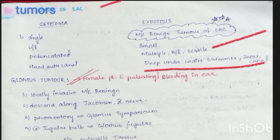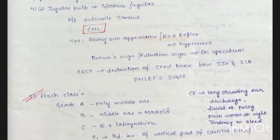Glomus tympanicum is at the promontory; glomus jugulare is at the jugular bulb. Clinical features: pulsatile tinnitus, conductive hearing loss, tympanic membrane shows rising sun appearance or red reflex. Brown sign (pulsation sign) on pneumatic speculum. CT shows destruction of the crest of bone between the internal jugular vein and internal carotid artery — the 'bilged' or flipped sign.